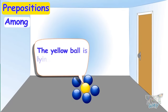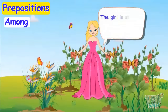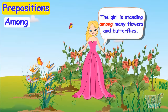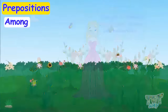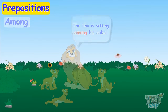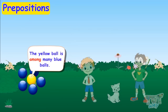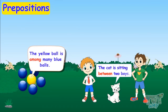The yellow ball is lying among many blue balls. The girl is standing among many flowers and butterflies. The lion is sitting among the cubs. So when something is in the center of more than two things, we say 'among'. When something or someone is in the center of two things, we say 'between'.